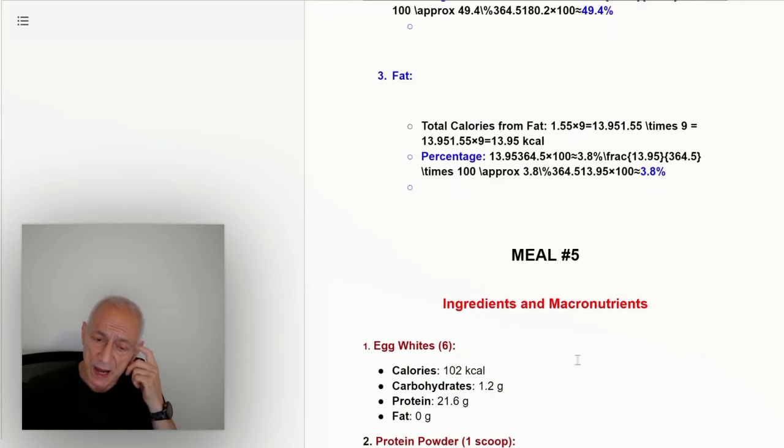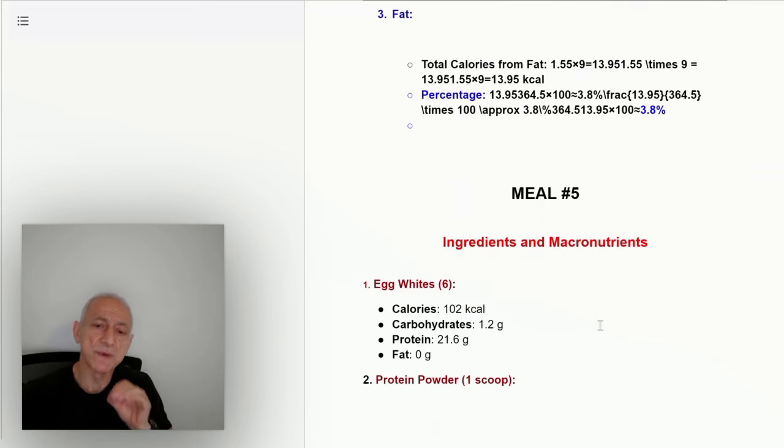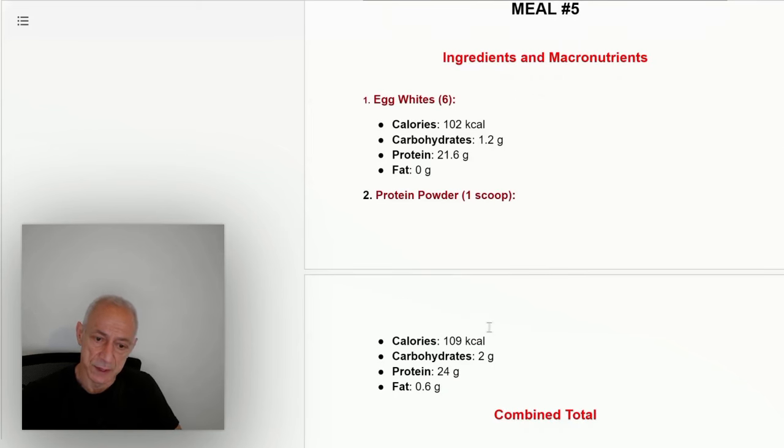Now, this is my last meal. I eat this meal right before I go to sleep. But before I eat this meal, I take a very hot shower. And then I stretch. I do a stretching routine for about 40 minutes. Then I eat this meal. It's a very small meal, just six egg whites. I make an omelet. I don't put any seasoning in this.